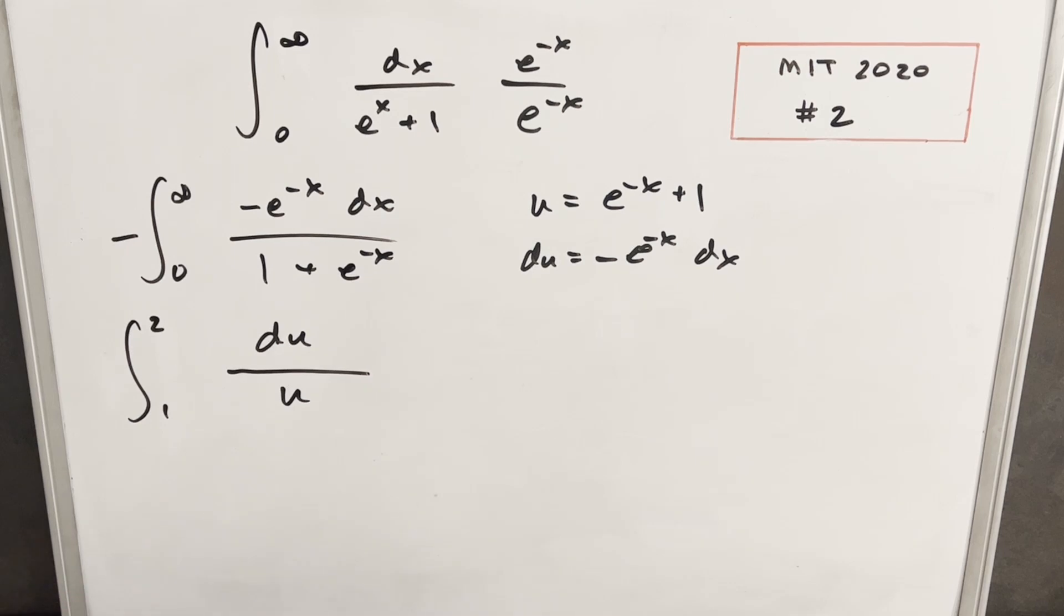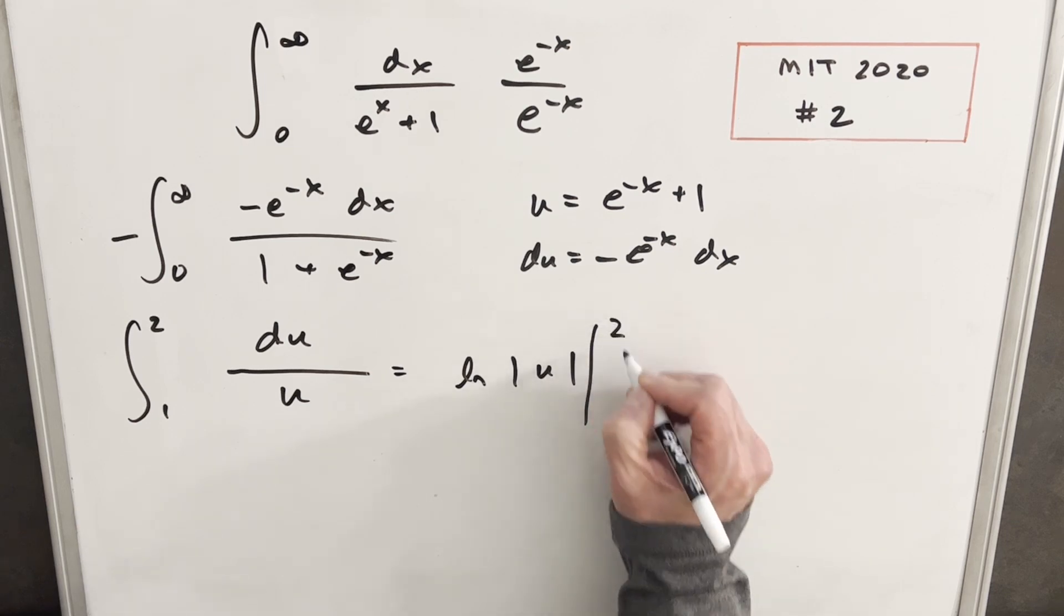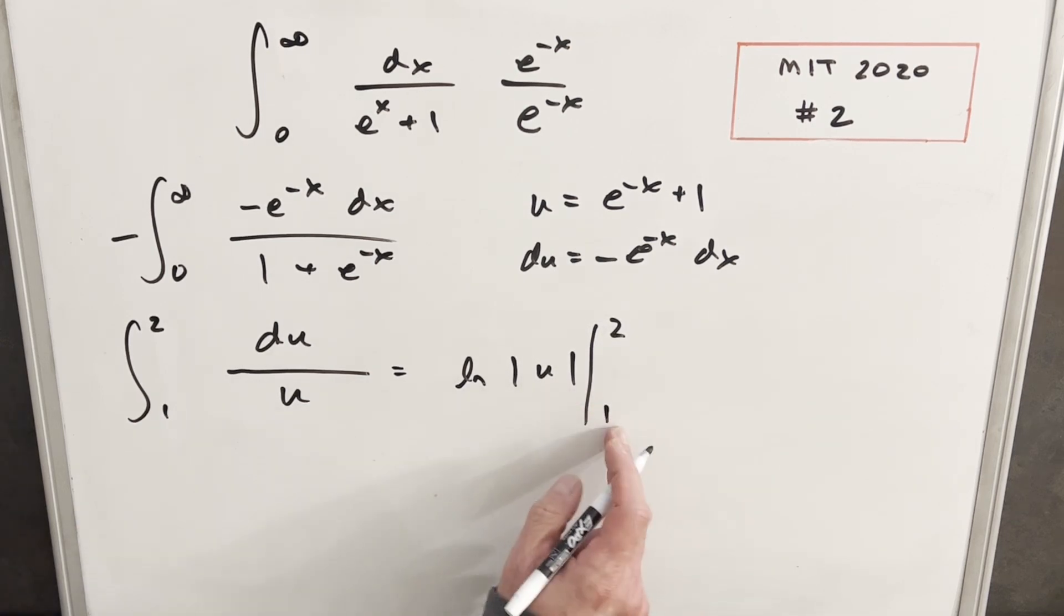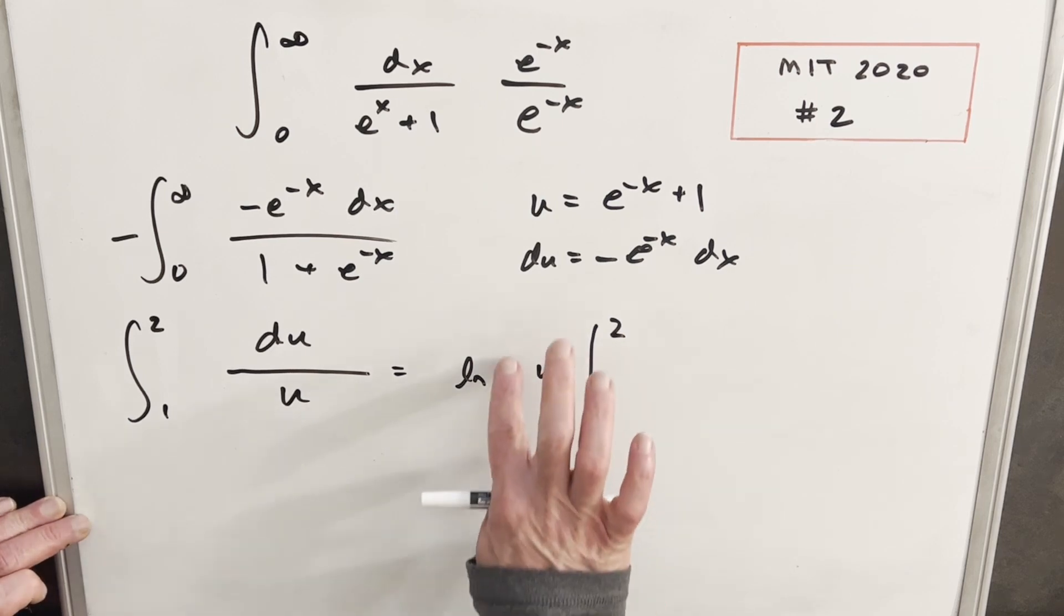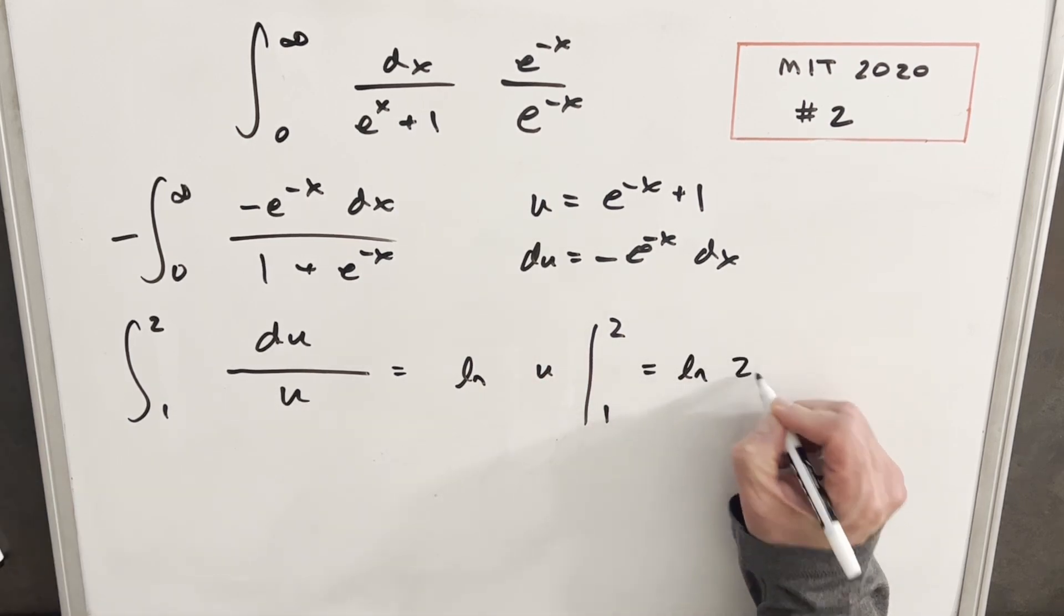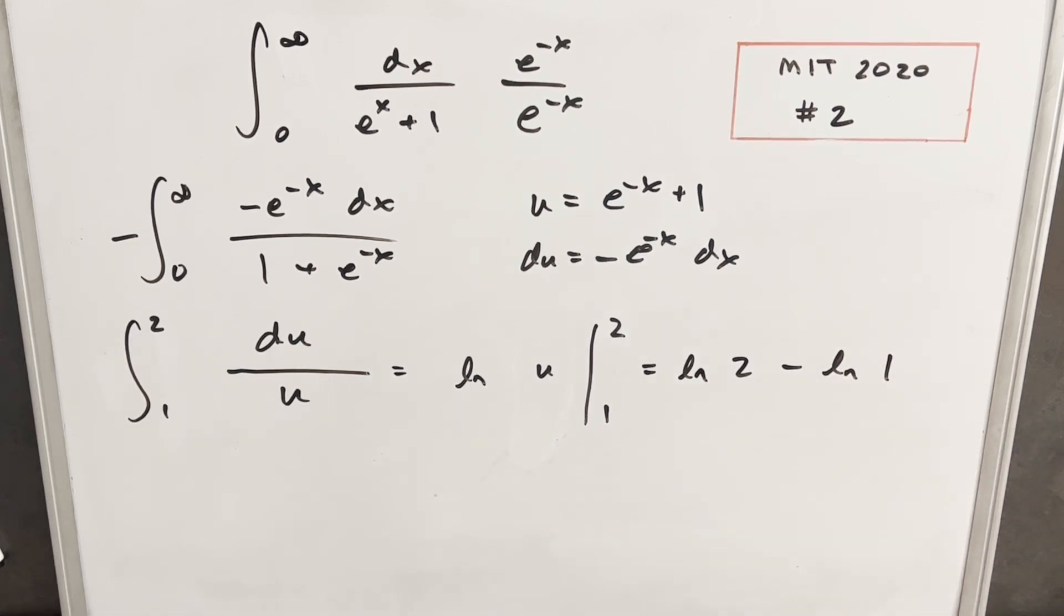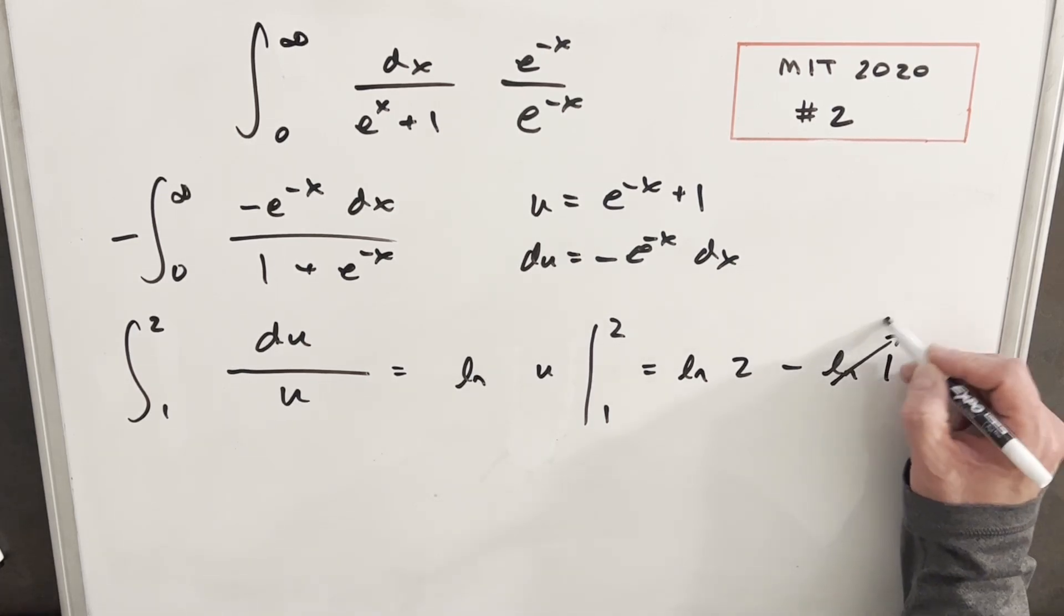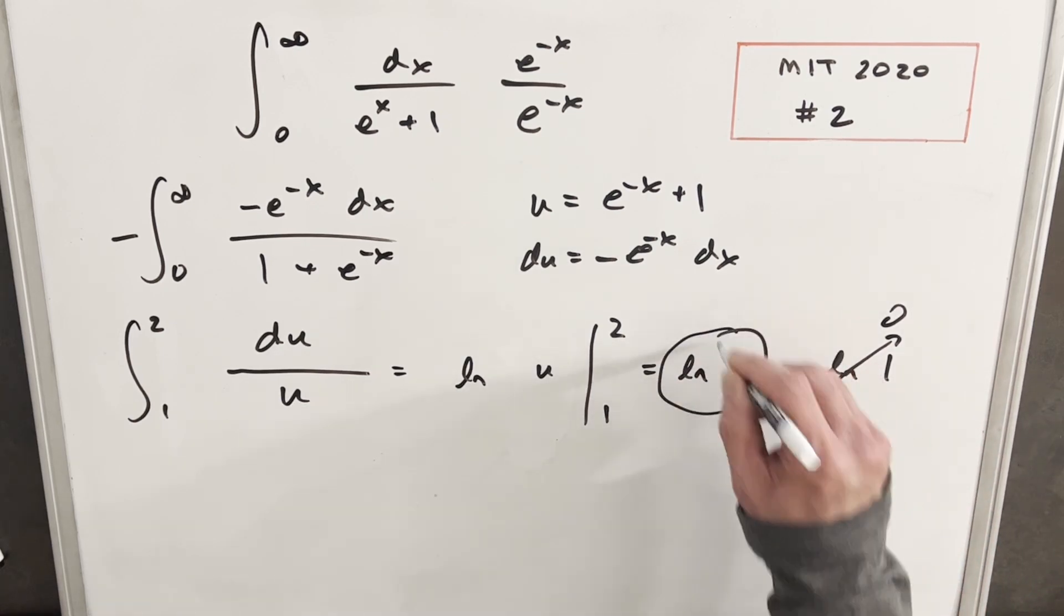Okay, now that we're integrating from one to two, we can just do this. So we know that this integral is going to be natural log absolute value of u from two to one. Now we're just dealing with numbers and they're always positive. So I'm just going to remove my absolute value for now. So then evaluating this, we're just going to have natural log of two minus natural log of one. Natural log of one is just zero. So then we're just left with our final answer, natural log of two.